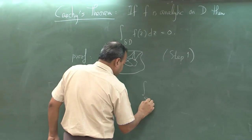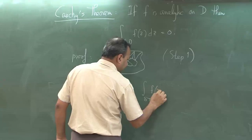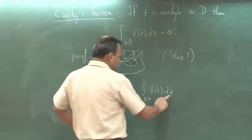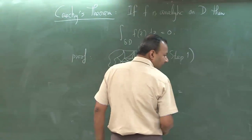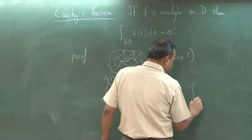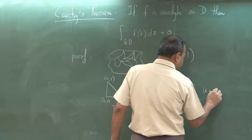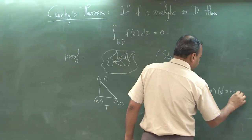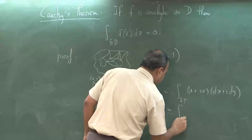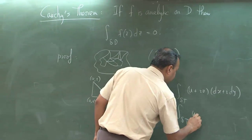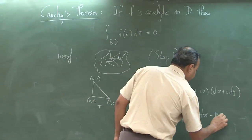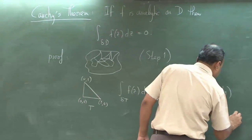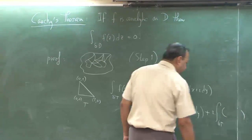Let us call this triangle T. Look at the integral over the boundary ∂T of f(z). We can split this as the integral over ∂T of (u + iv)(dx + i dy), which is the integral over ∂T of u dx minus v dy, plus i times the integral over ∂T of a similar quantity.